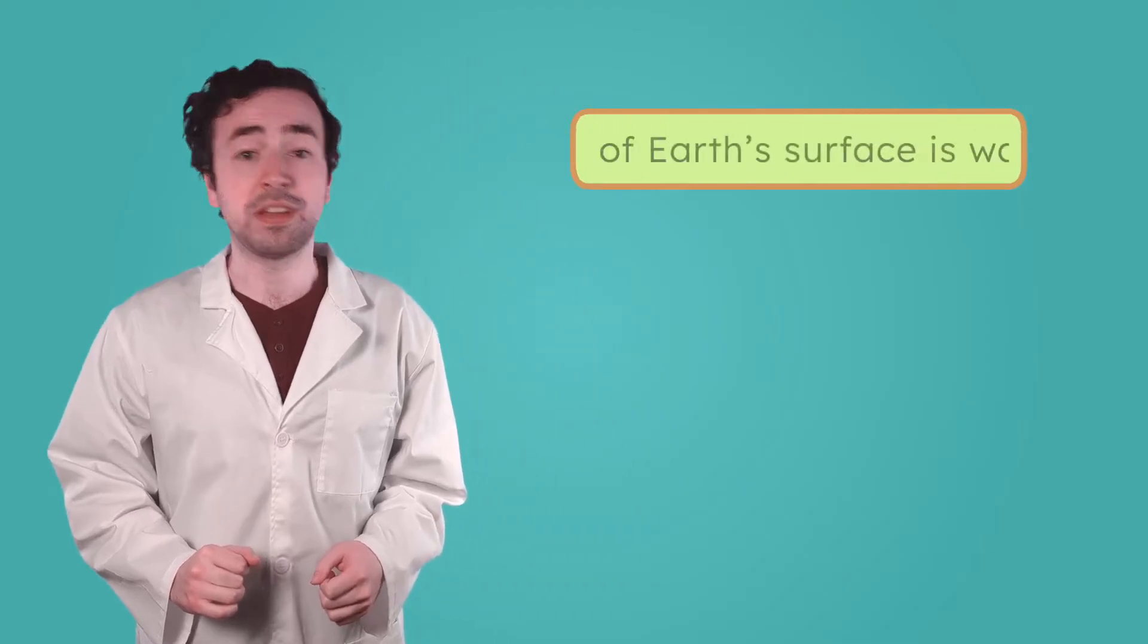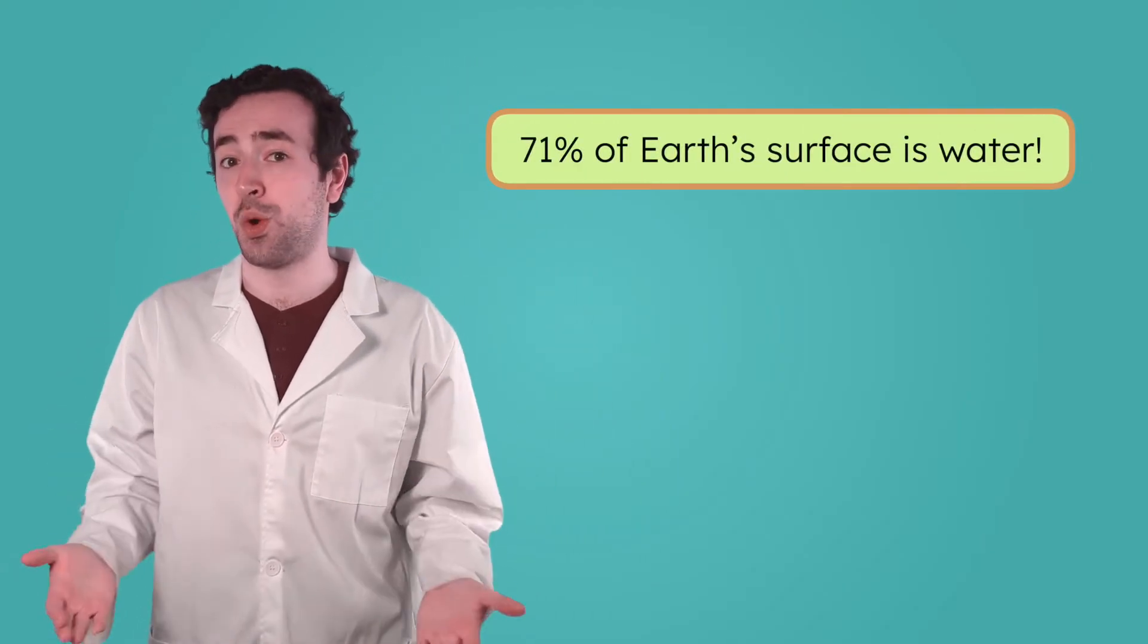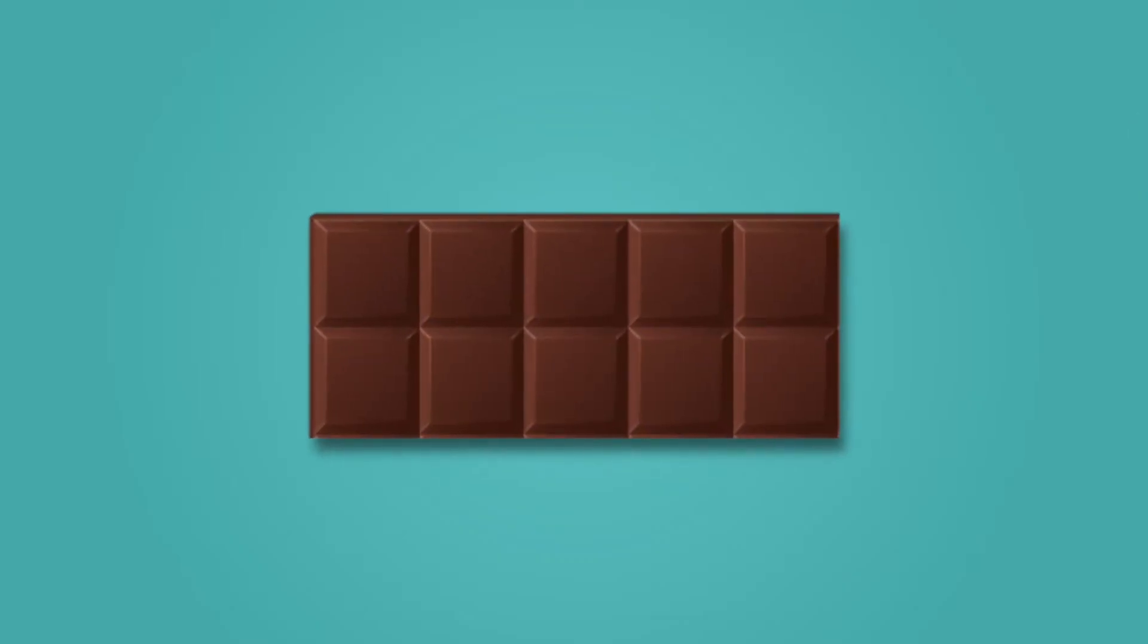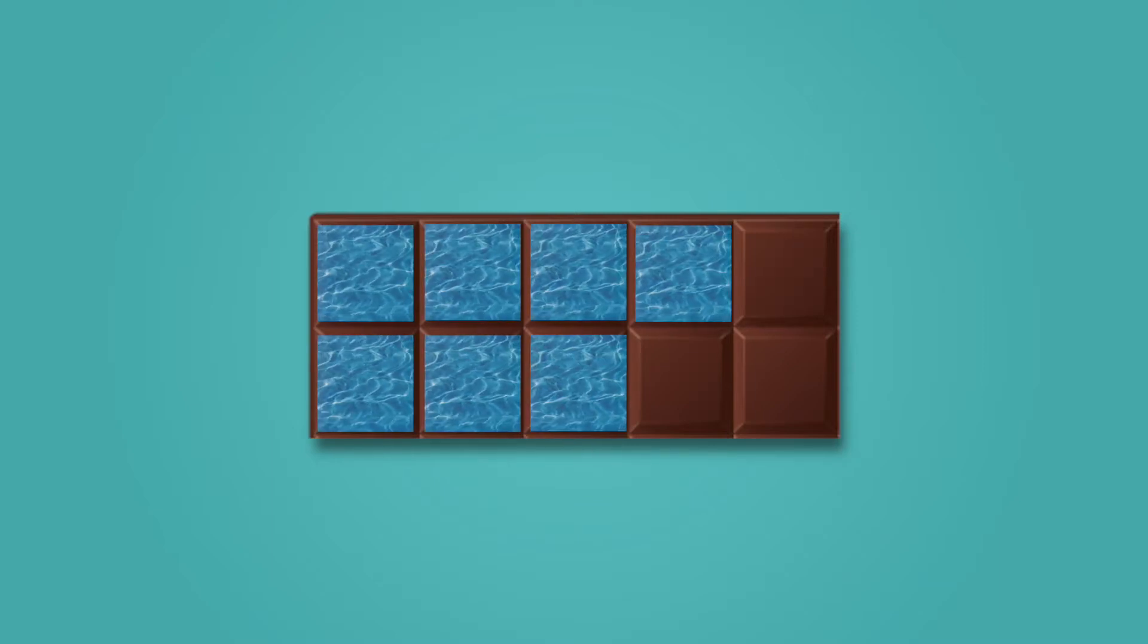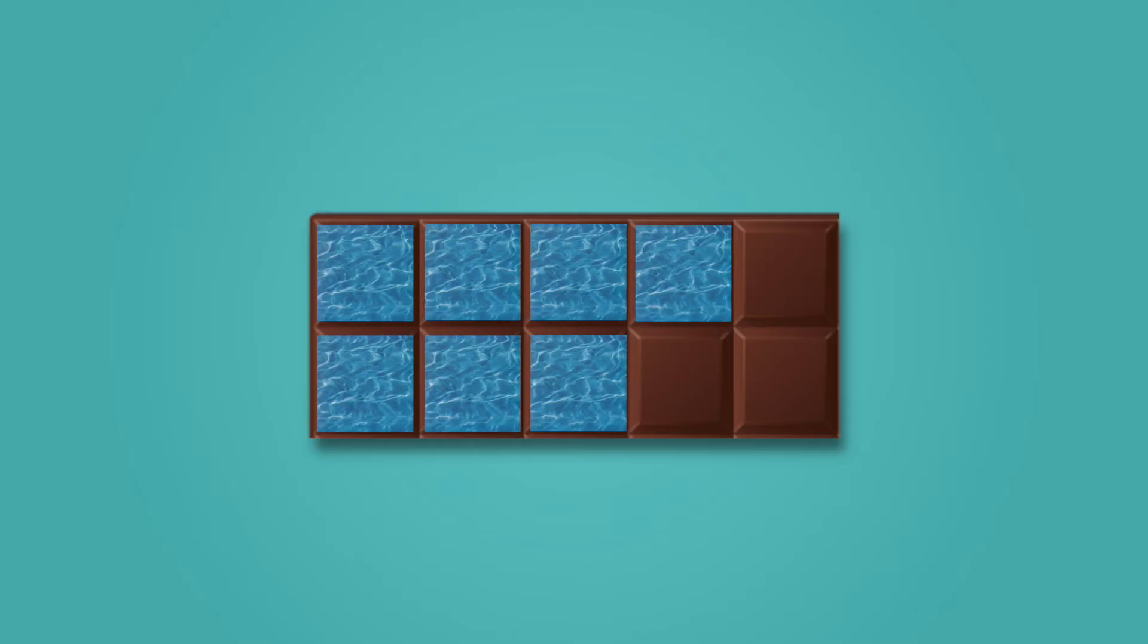Even though we earth scientists spend a lot of time studying land, like rocks, mountains, and volcanoes, our planet is mostly covered in water. In fact, 71% of earth's surface is water. Imagine a chocolate bar cut into 10 pieces. If this chocolate bar were the surface of the earth, seven of its 10 pieces would be water. That's a lot of soggy chocolate.